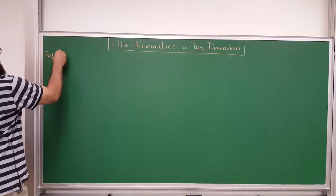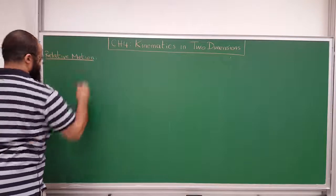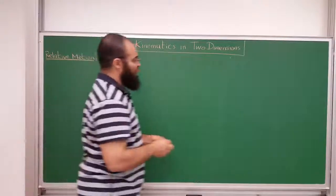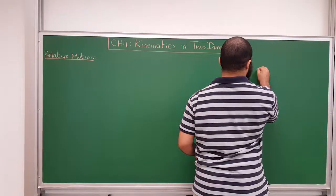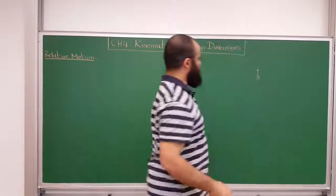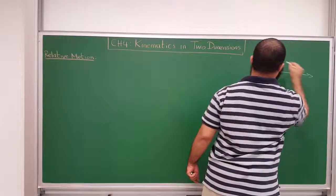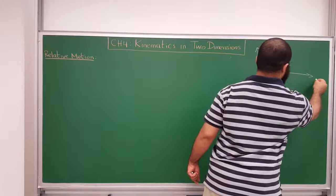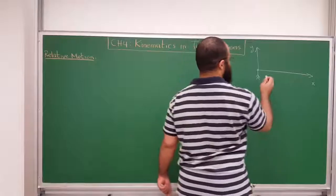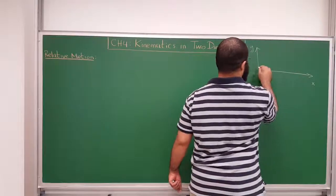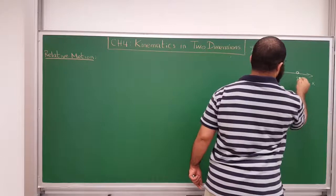Relative motion. So let's just use two objects, and then we'll talk about three objects. So here is — you are here. You're here, and let's say the frame of reference, or the coordinate system. This is U, this is X, and Y. And let's say, here is another — this is U. This is A, and this is B. This is object B.